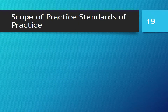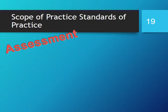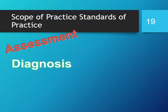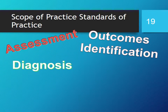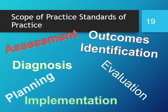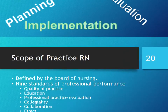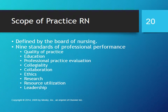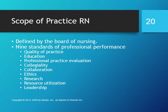The six standards of practice include assessment, diagnosis, outcomes identification, planning, implementation, and evaluation. The scope of practice for RNs is defined by the boards of nursing. The nine standards of professional performance are quality of practice, education, professional practice evaluation, collegiality, collaboration, ethics, research, resource utilization, and leadership, according to the American Nurses Association Nursing Scope and Standards of Practice.